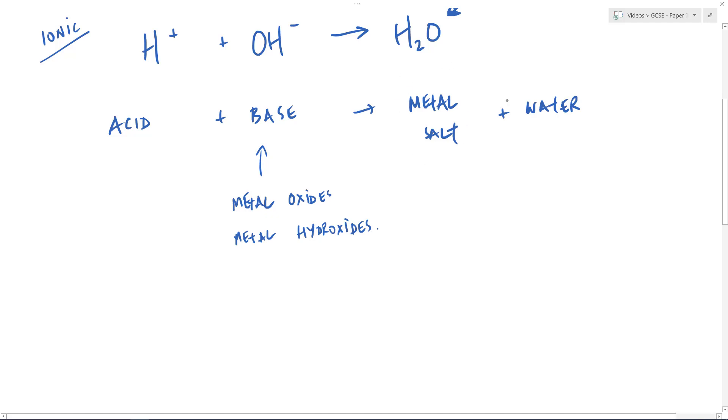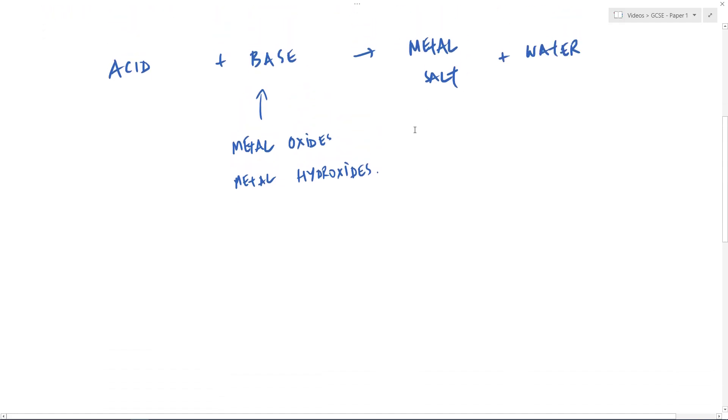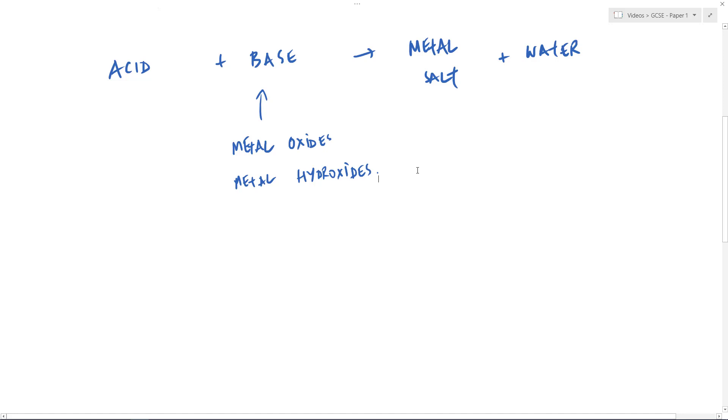But the key thing here is actually how we name the metal salts and that doesn't just come up in this acid and base topic, it also comes up in a couple of others but that's a very important thing. And really you just need to know what happens when three particular acids react and the endings of these metal salts that are produced.